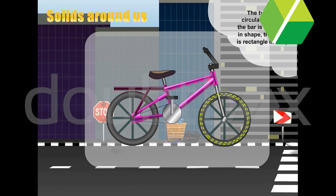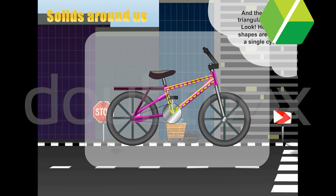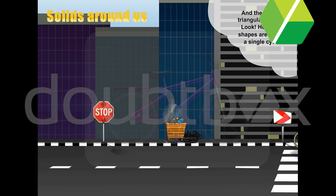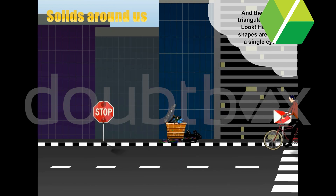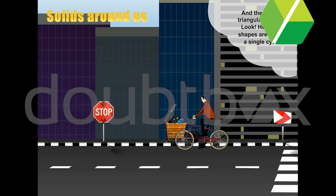The tyres are circular in shape. The bar is cylindrical in shape. The carrier is rectangular in shape and the frame is triangular in shape. Look how many shapes there are in a single cycle.